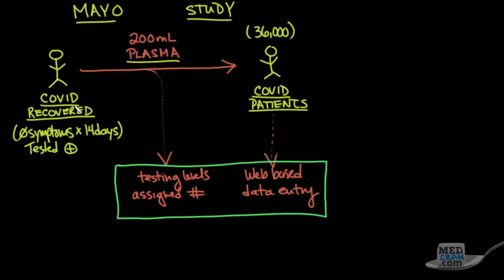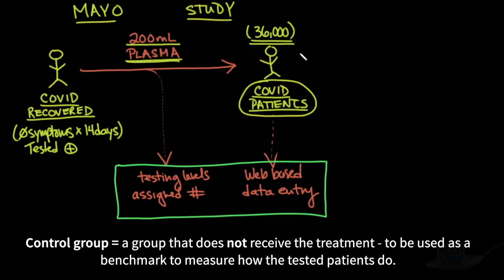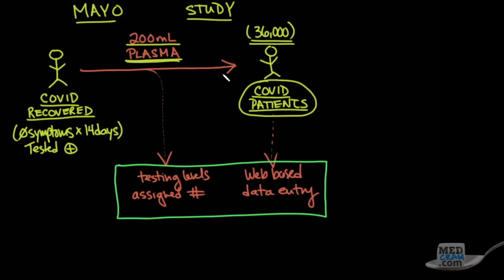If in the mind of the clinician the COVID patient was suffering life-threatening symptoms, like they were almost on the ventilator or on the ventilator, they would transfuse 200 milliliters of convalescent plasma that was ABO compatible to this patient. As it turned out, they did this to around 36,000 patients across the country. There was no control group, and that's very important to understand. They wanted to have this go out there as much as possible.